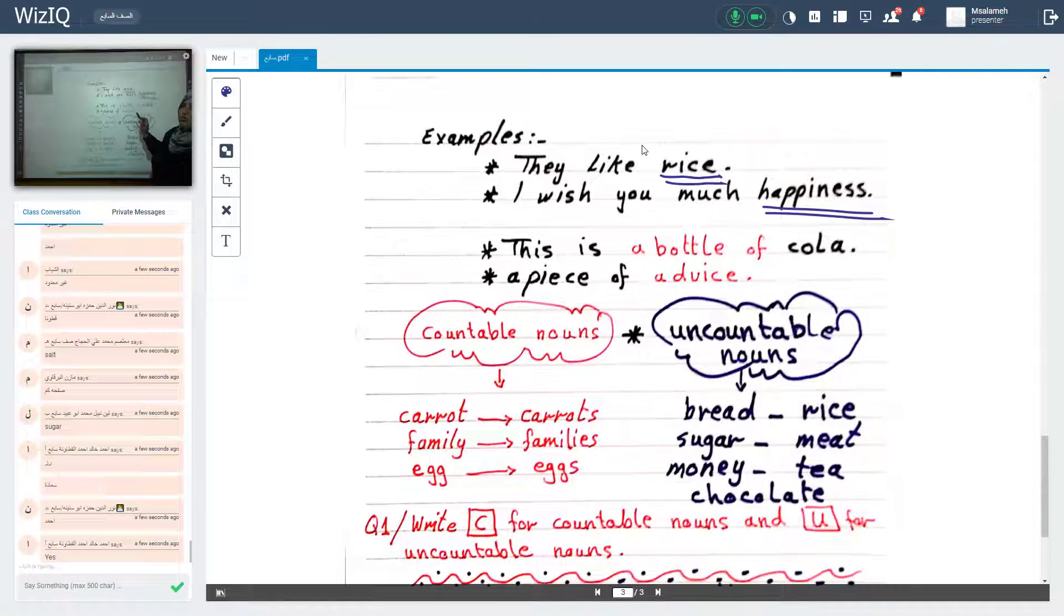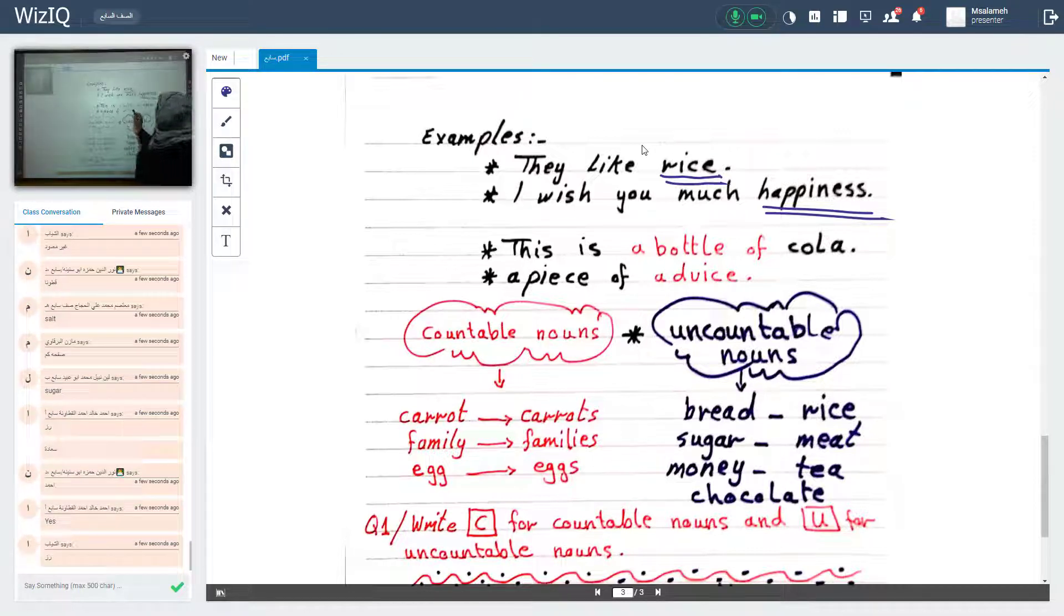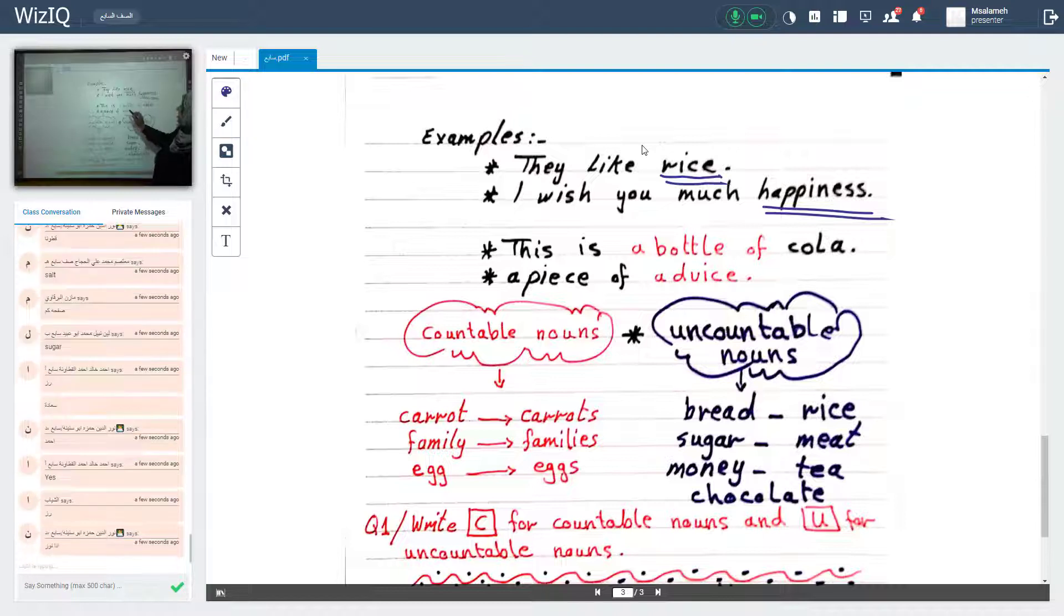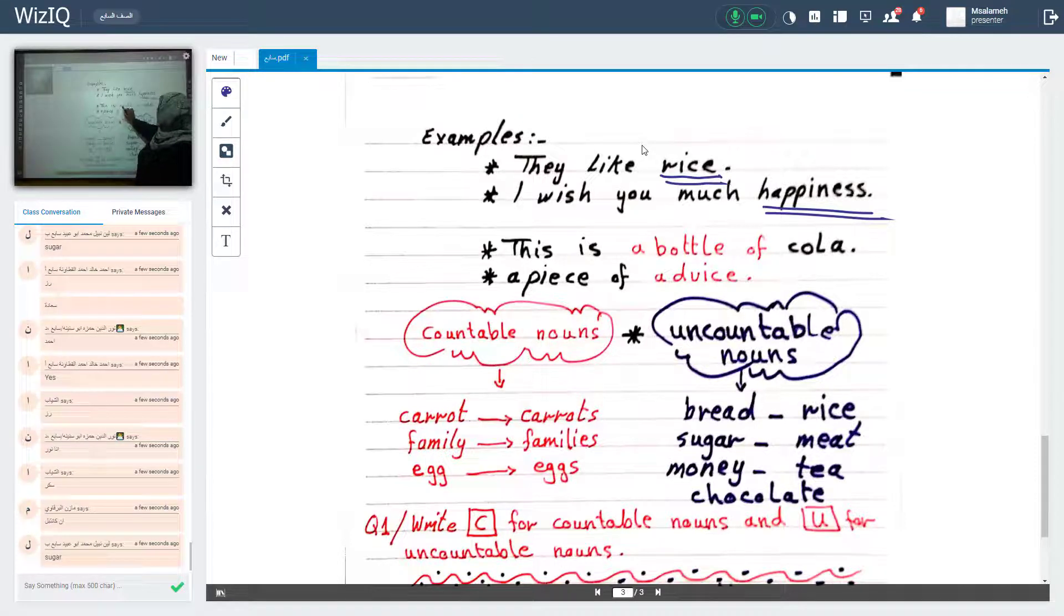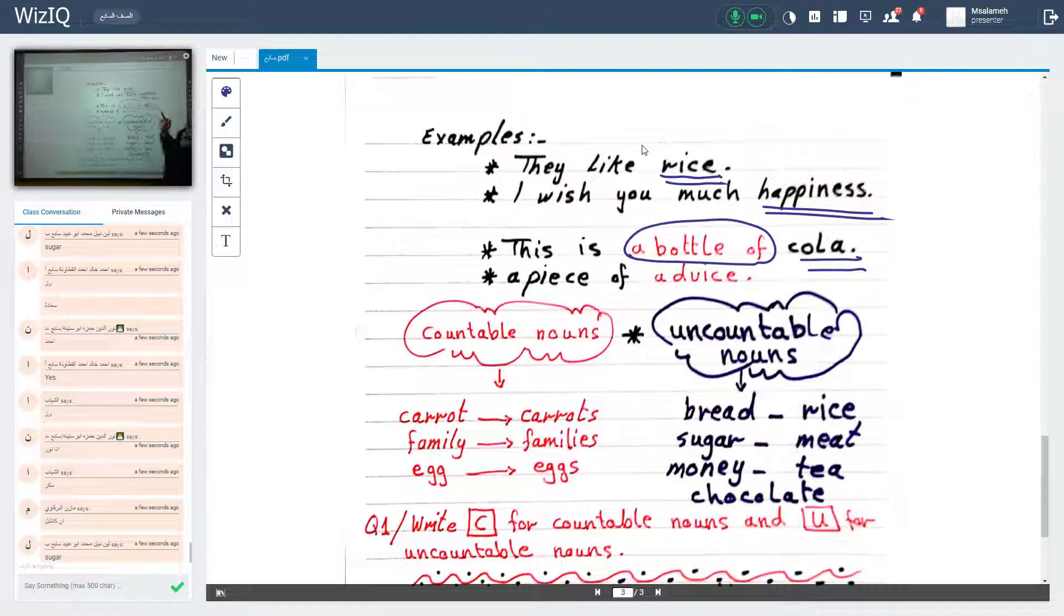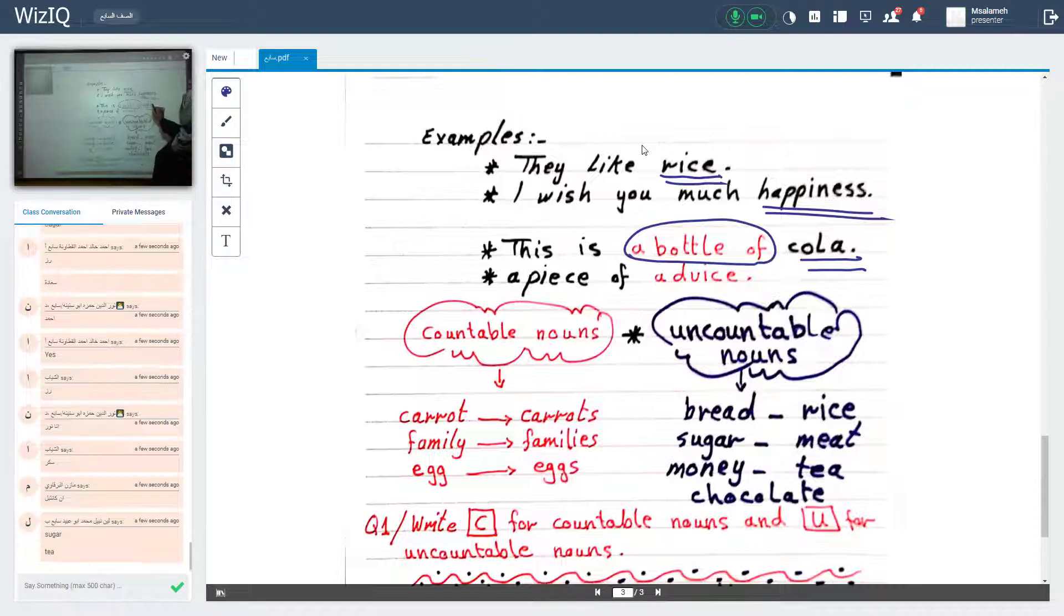This is, now, pay attention here. Here we want to use a phrase to count uncountable things, like this sentence. Answer in English. This is a bottle of cola. طبعاً الكولا uncountable. So here we use a bottle of to be countable. يعني أنا حددت الزجاجة نفسها. مش المادة. كولا. It's uncountable. Pay attention.